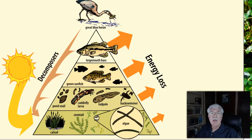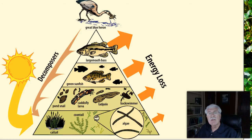As we move up the pyramid, energy is transferred up to organisms at higher levels. Energy is also transferred out of the pyramid at each step and fewer species and individuals can be supported. The smallest number of species and least amount of energy is in the carnivores and top predators. The pyramid not only shows us what eats what, but how much energy is available at each level in the environment.